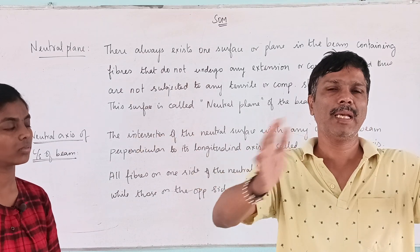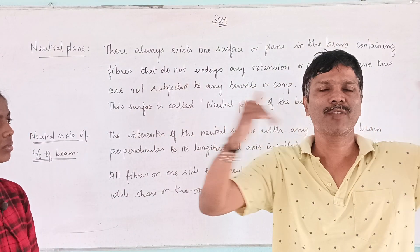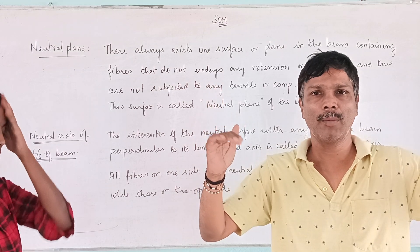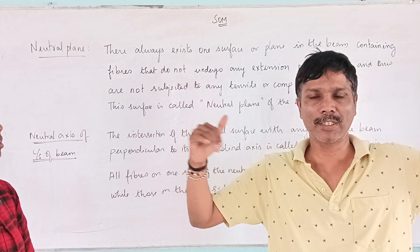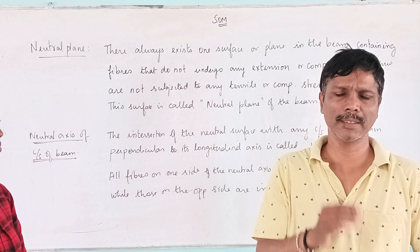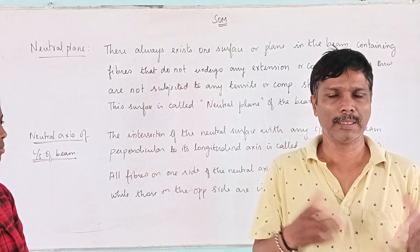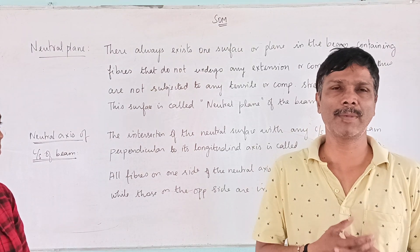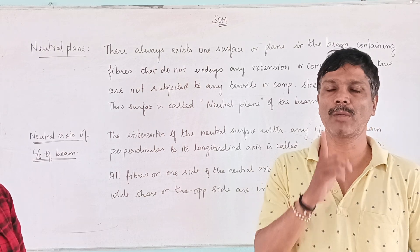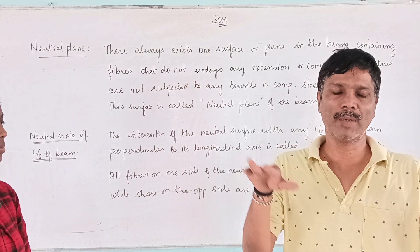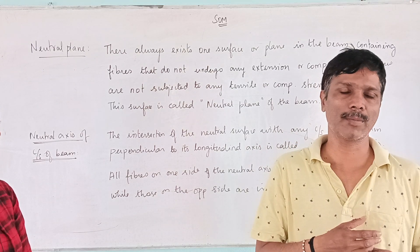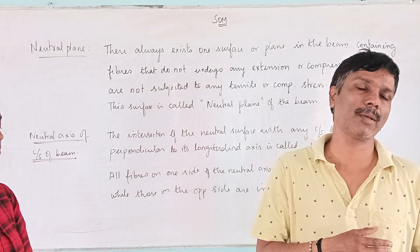In a bending beam, there is compression of the top surface or bottom surface. However, there is a layer between tension and compression that experiences neither — this is the neutral plane. That layer is called the neutral plane.